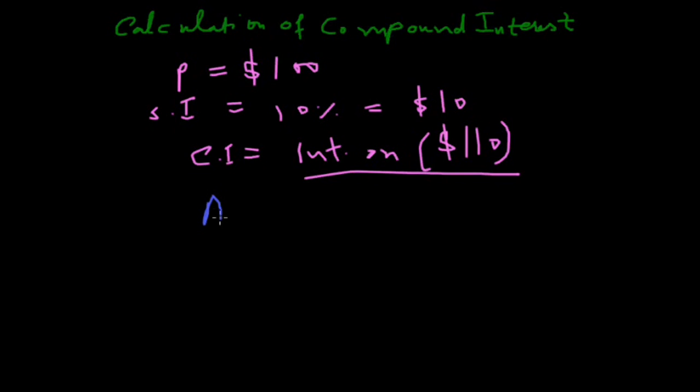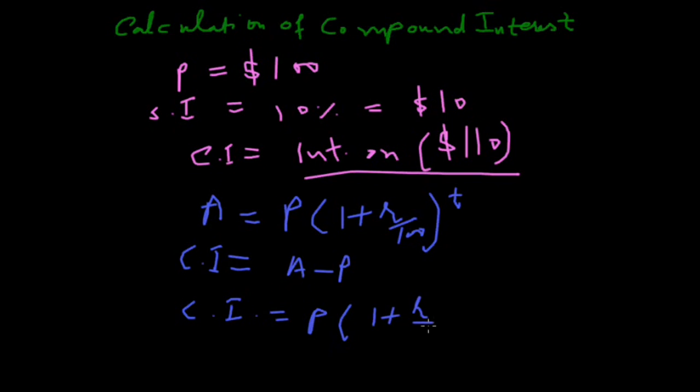Formula: first of all we calculate amount, which means A = P(1 + r/100)^t. And compound interest is A minus P. So compound interest will be P(1 + r/100)^t minus P. With this simple formula we can calculate different periods compound interest. Thank you very much.